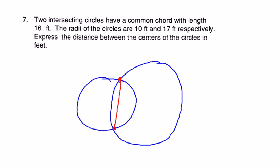And then it gives you the radius of the circles. The radius of the smaller one's going to be 10, and the radius of the bigger one's going to be 17.